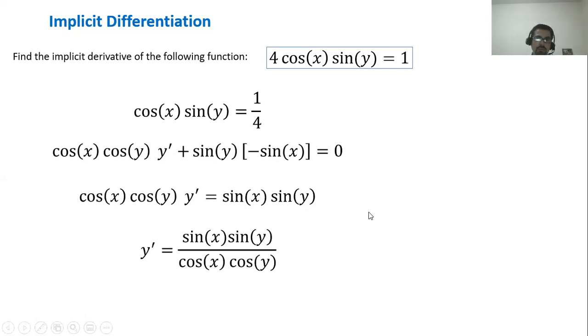And finally, if we want to solve for y prime, you divide both sides by cosine x, cosine y. And this is a pretty decent result, but it is always very nice to simplify.